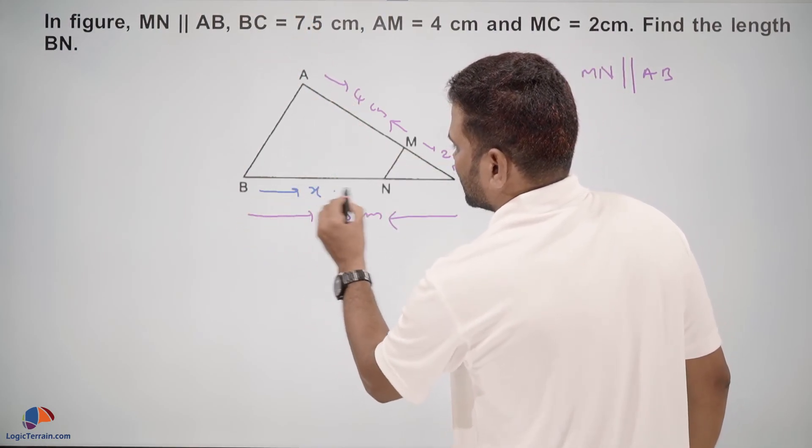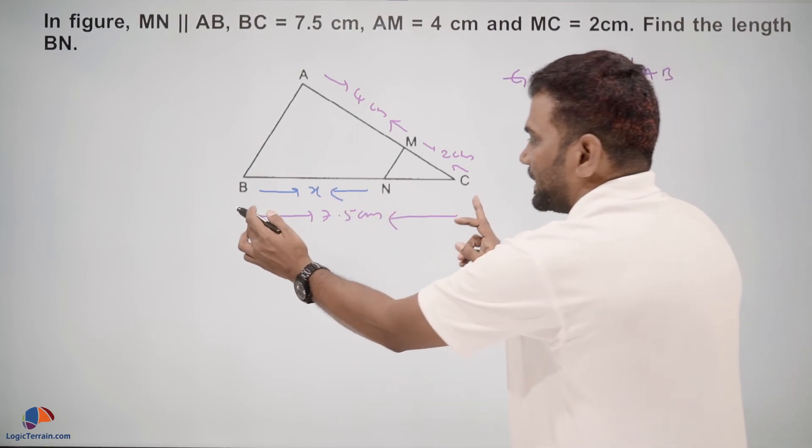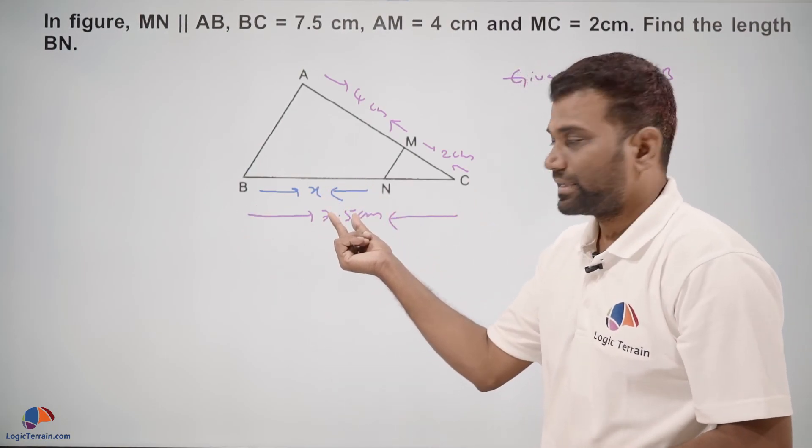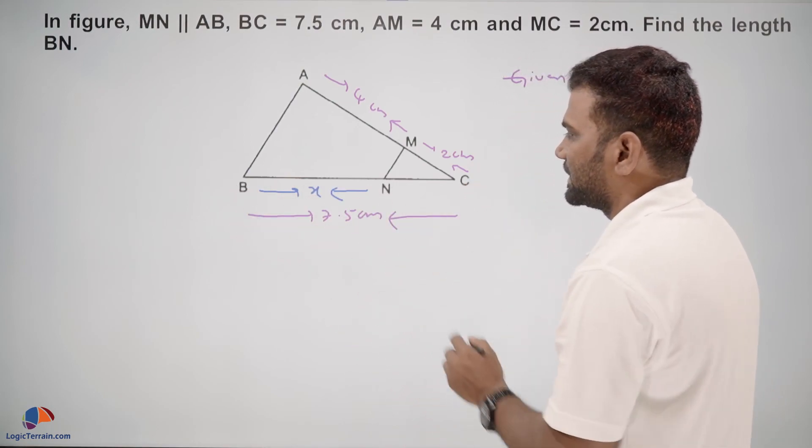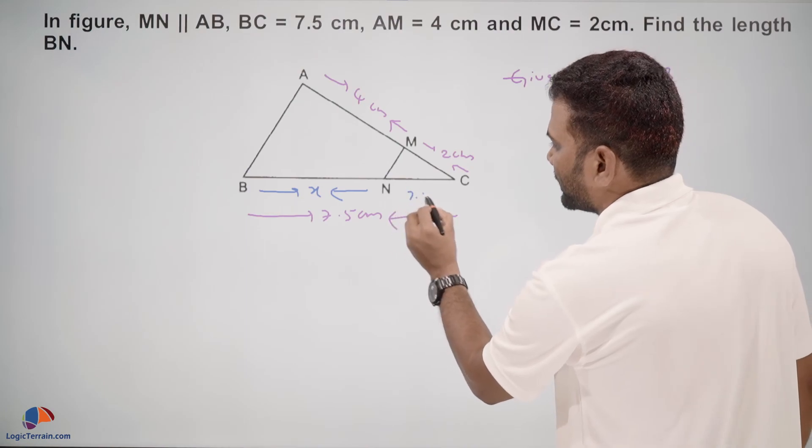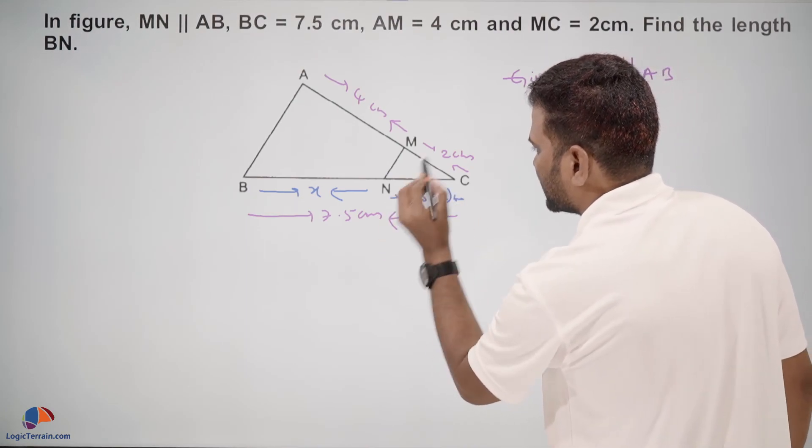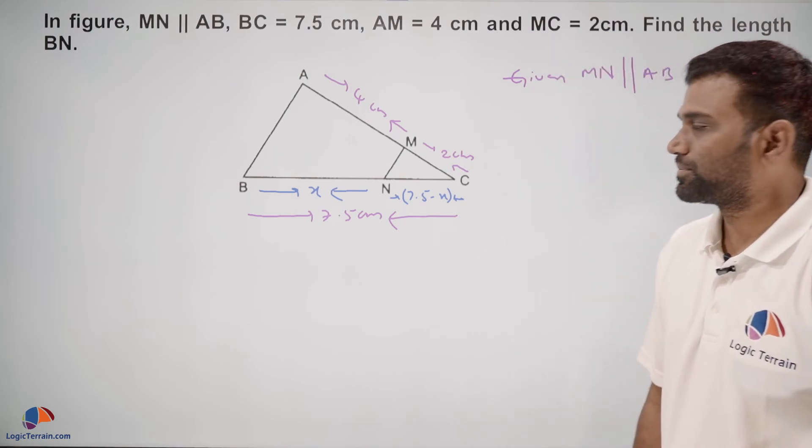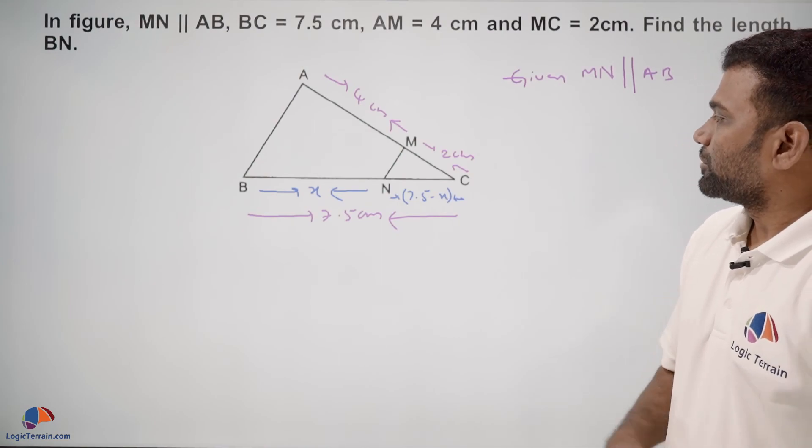Let us take BN as X since we don't know what it is. We have the whole length as 7.5, and this is X. What about NC? NC will be 7.5 minus X. So this is the known information.